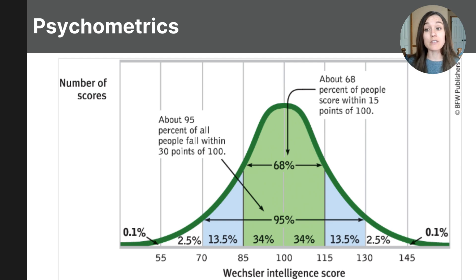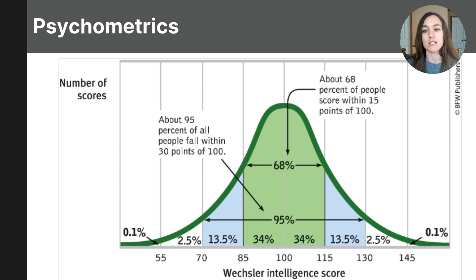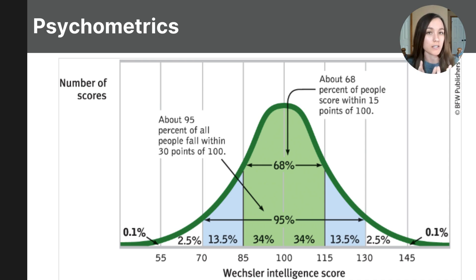Scores beyond 130 or below 70 are rare and are considered outliers. Comparing a student's IQ score to this curve can help schools understand if they fall within normal abilities or if that student might need extra support. This concept helps us see where individuals stand in comparison to the average, and IQ scores typically cluster around the mean in this normal curve.